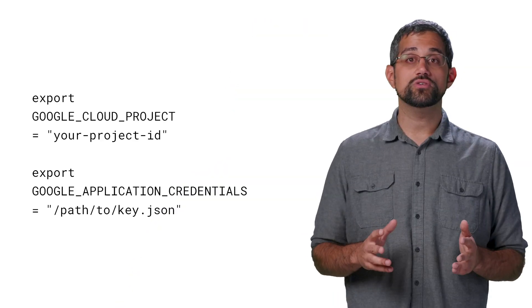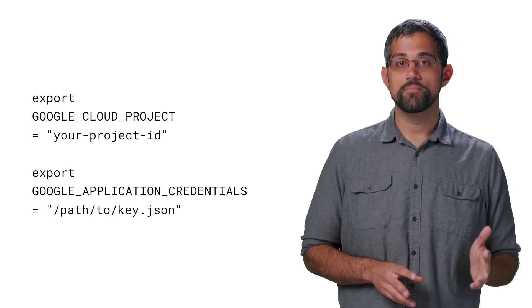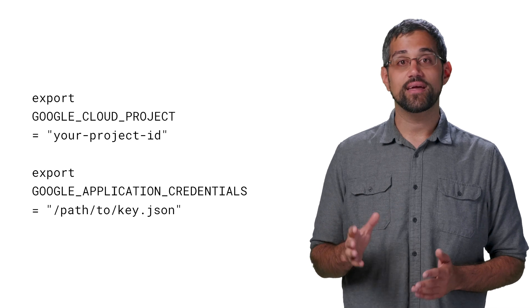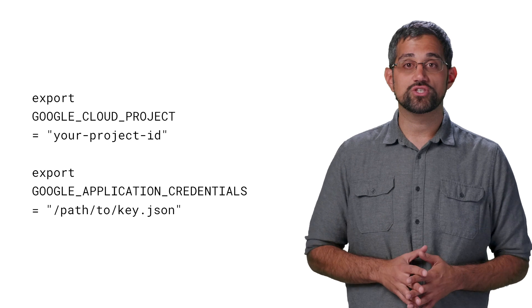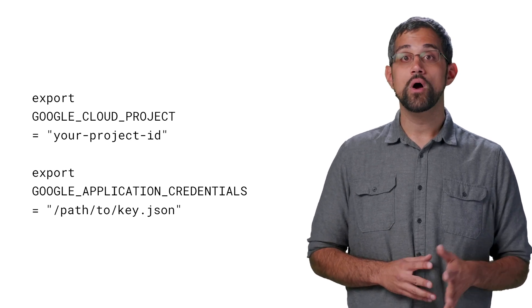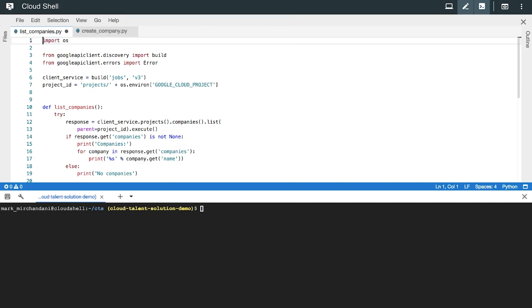That's enough setup for now. We've got everything we actually need to run some code, so let's do it. We'll use the client libraries in Python, but you can check the docs for code samples in your preferred language. We'll also use the convenient Cloud Shell that you can access through the console. If you're doing this from your own environment, make sure to get the Google Cloud SDK and the client libraries installed. To run the code using the libraries, you just need to make sure some environment variables are set up — one for the project and one for the path to your service account's key file.